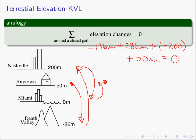This is not really surprising if you stop and think about it. If you start your hike at Anytown and then progress to Death Valley, then go to Nashville, then to Miami, and then end up back at Anytown where you started from, you are obviously going to end up at the elevation you began at. Therefore, the net change in elevation over these hikes had better be zero. If you end up at the same elevation you started from, the net change in elevation had better be zero.